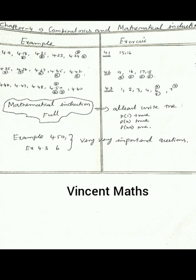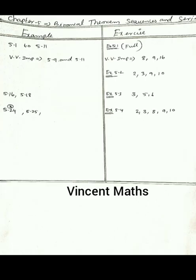Next, we will see the importance in the 5th chapter. If you look at the 5th chapter, it is very easy. If you look at the first exercise, you will see the same pattern. There are 3 marks questions. The important exams are 5.1 and 5.11. The exam numbers are 8th, 9th, and 16th.